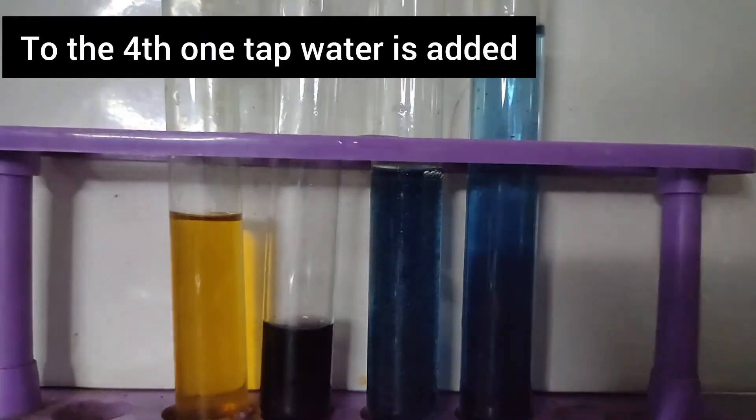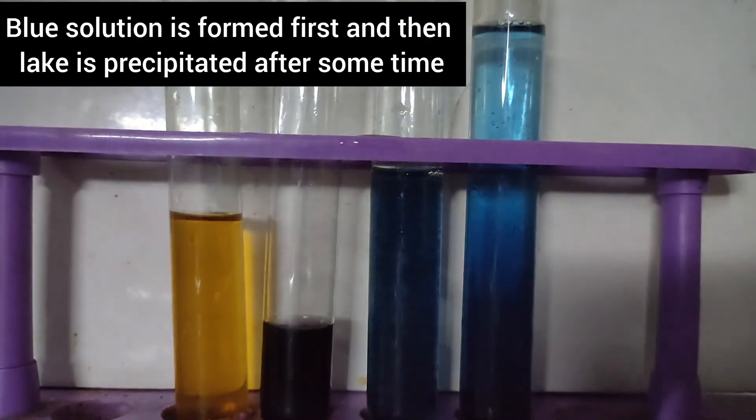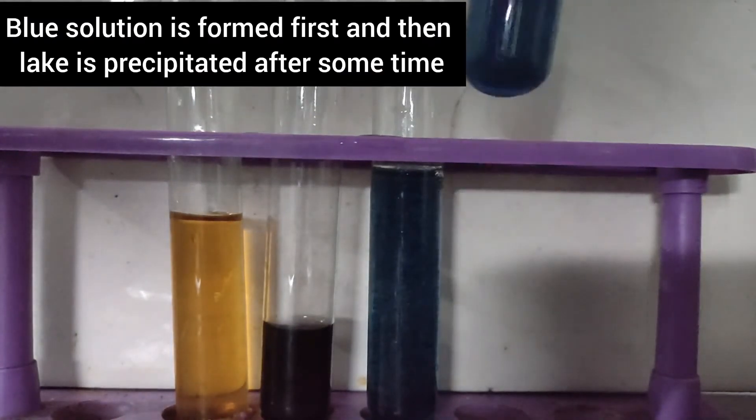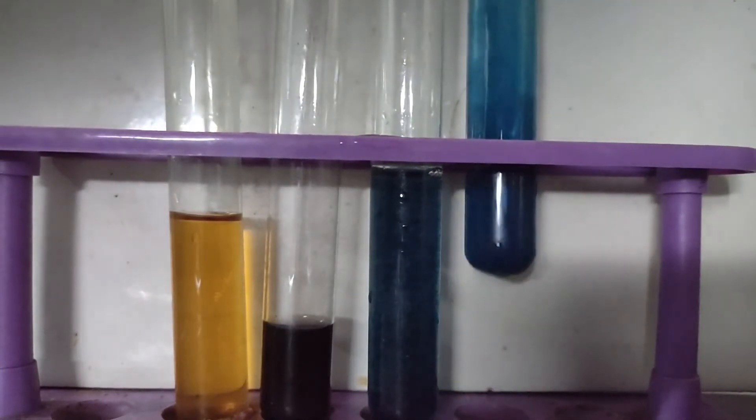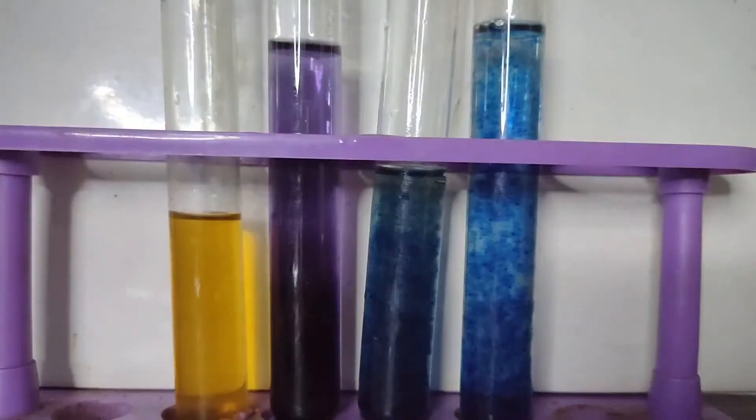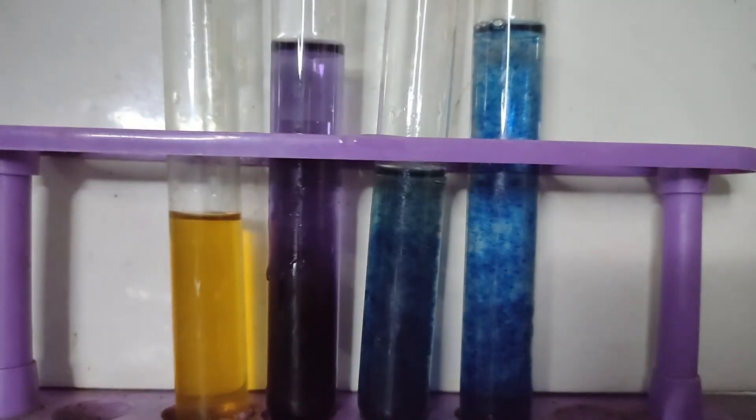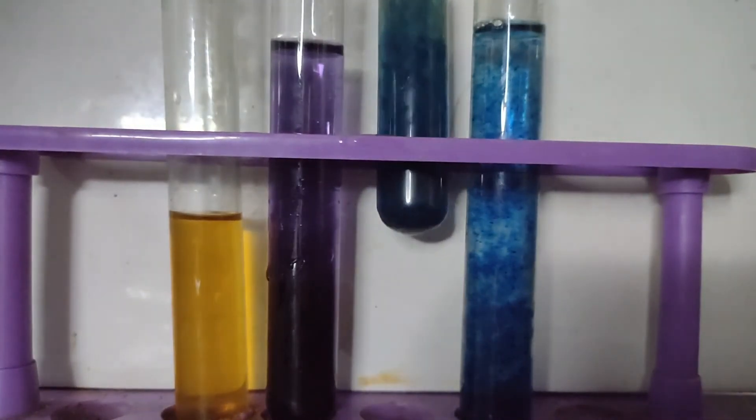In the fourth test tube, some tap water was added and a blue colored solution is formed on the top. After some time, the lake precipitates. In the second test tube, some more distilled water was added to show the colors.